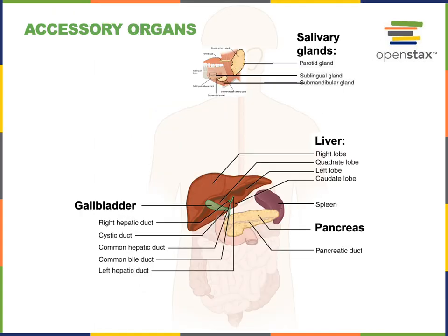The accessory organs of the digestive system include the salivary glands, the liver, the pancreas, and the gallbladder. The salivary glands produce saliva, a watery secretion that helps to lubricate the oral cavity and lubricate the bolus during deglutition. Saliva also contains enzymes — the major enzyme is salivary amylase, which initiates the chemical digestion of carbohydrates.